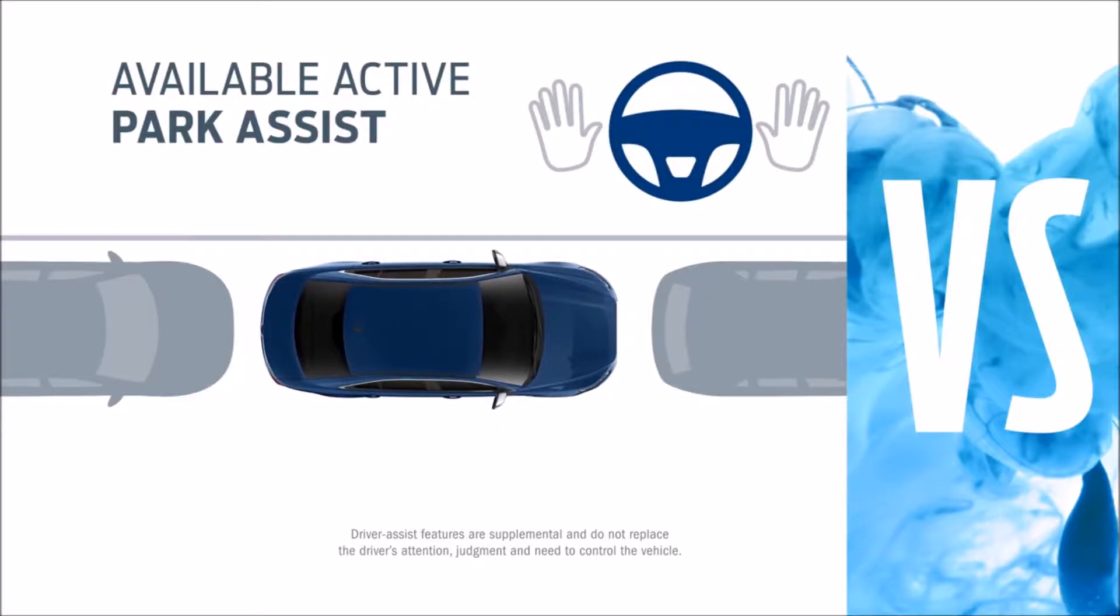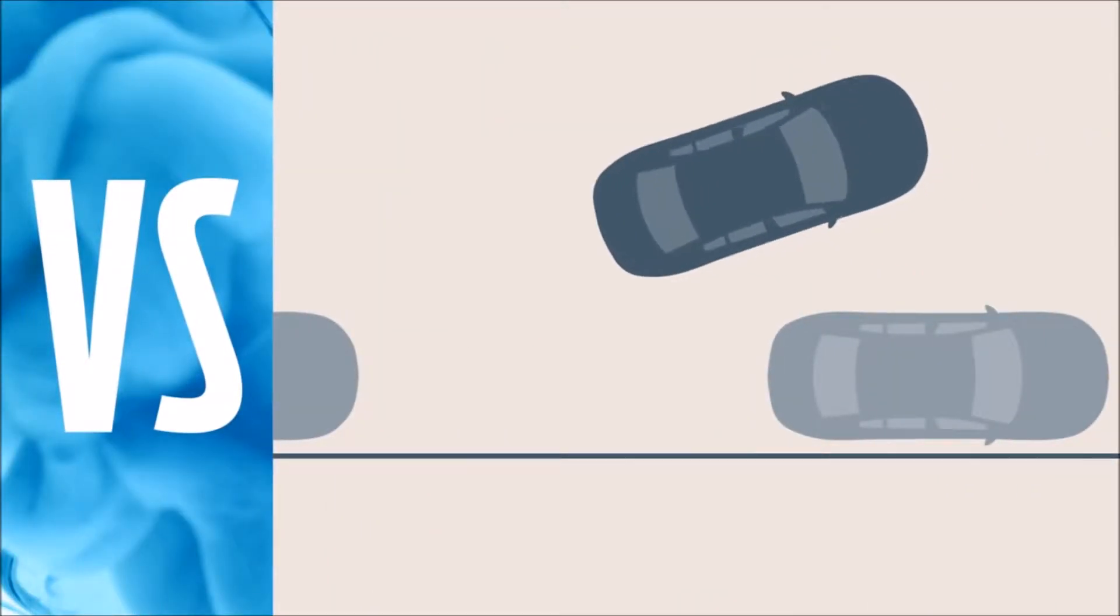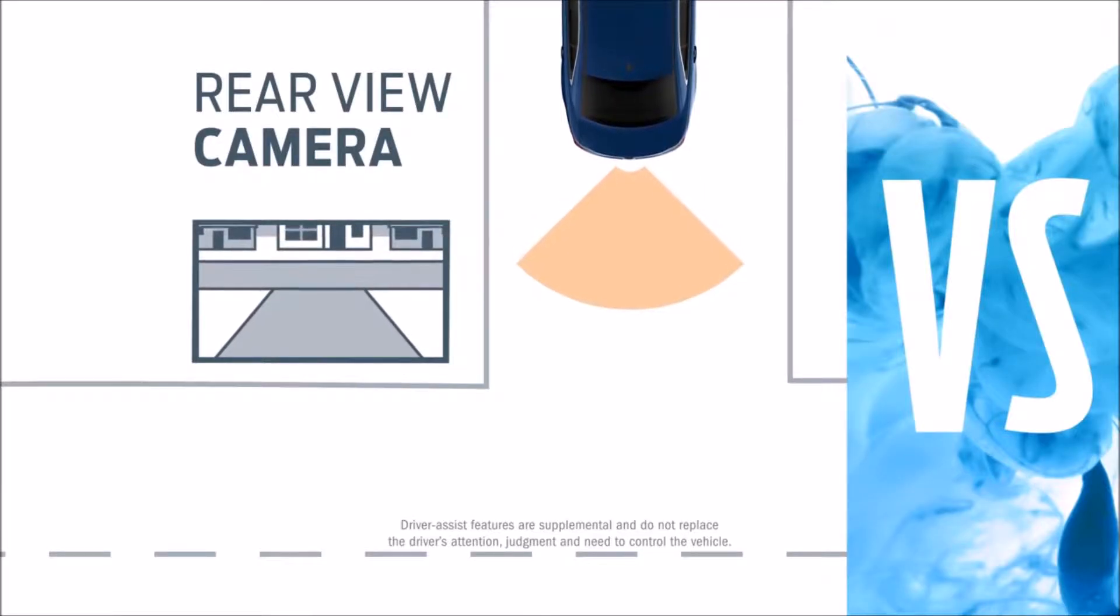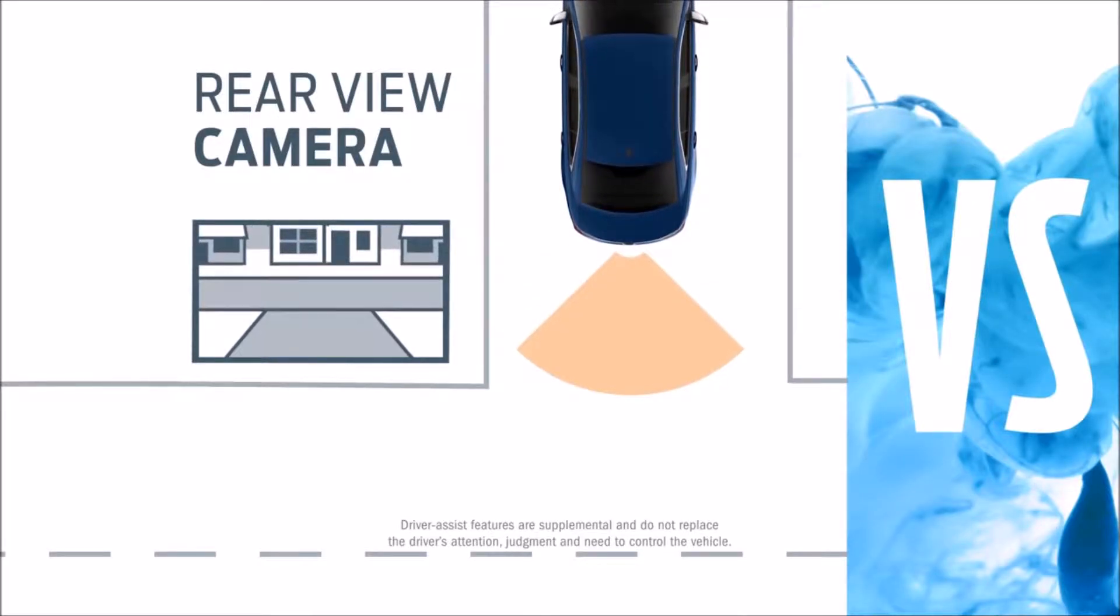Taurus has available active park assist, which finds a spot and practically steers the car into the space. Without this feature on Charger, you're asked to do much more.